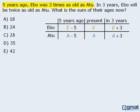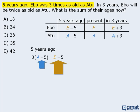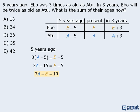Now let's work with the information regarding their ages 5 years ago. Here's Attu's age 5 years ago, and here's Ibo's age 5 years ago. These ages are not equal, since the question tells us that Ibo's age is 3 times that of Attu's age. So if we take Attu's age and multiply it by 3, these two values will be equal. From here we can take this equation and expand the left hand side, and then rearrange the terms to get an equation with 2 variables.